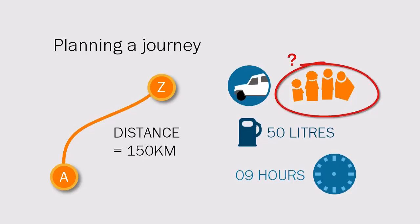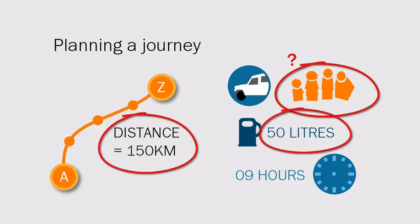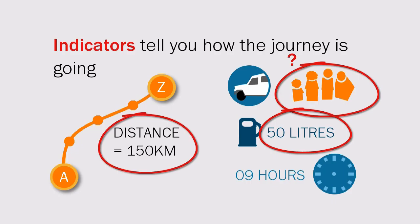You may have planned to assess this information at several points along the way. Here you decide if the car needs to be refuelled or if a break is necessary to rest the passengers. Information on fuel, distance, and how the passengers are doing are referred to as indicators. Indicators tell you how the journey is going.